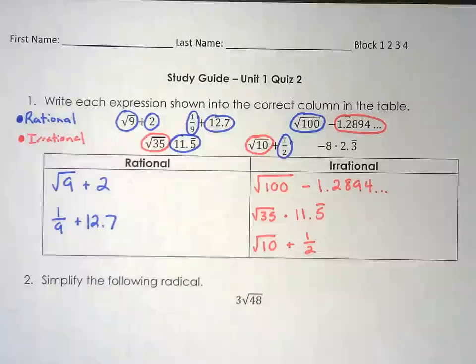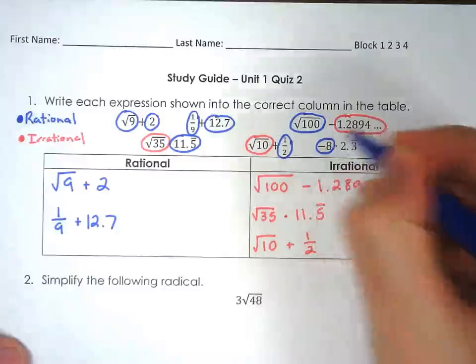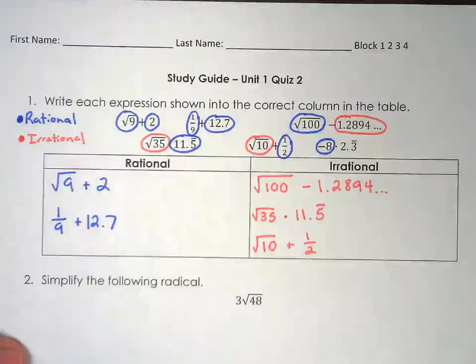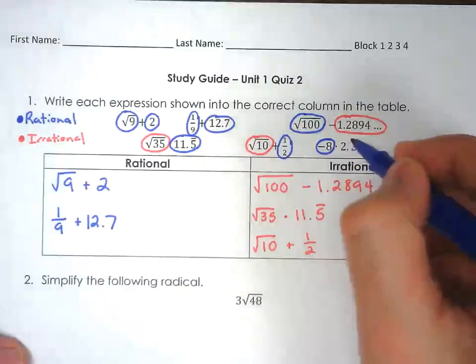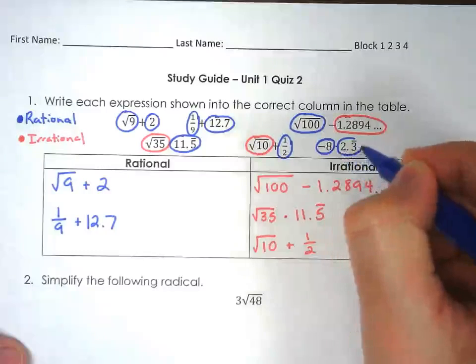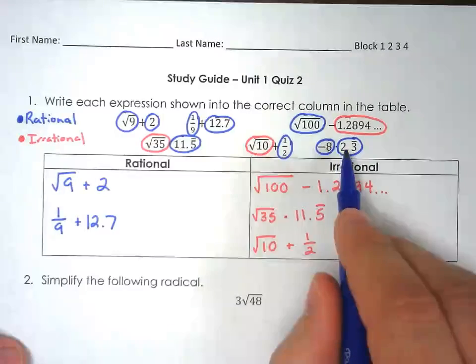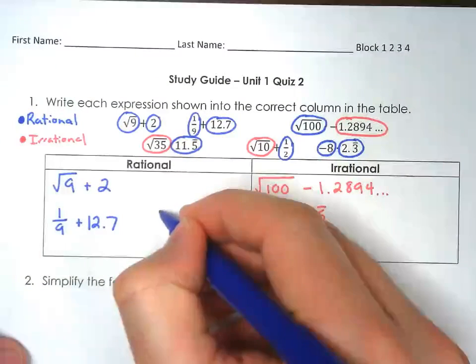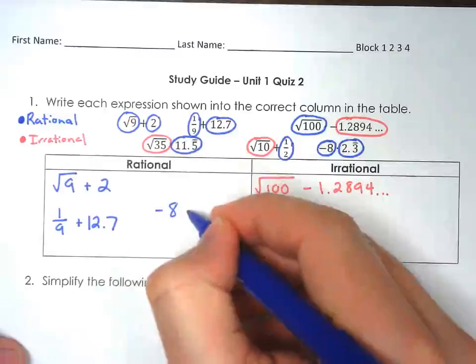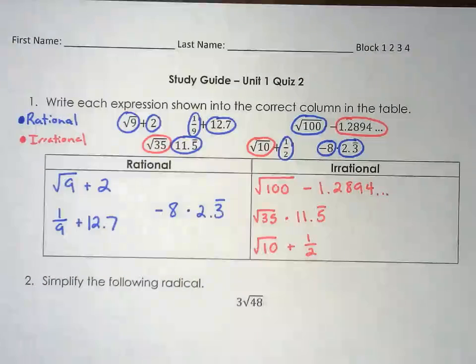Last but not least, we have negative 8. Negative 8 is considered to be a rational number. That is an integer. Remember all integers are rational. And it says times 2.3 repeating. Remember any repeating decimal is also going to be considered a rational number. So we have a rational and a rational. Well, two rationals always make a rational. So we're going to add negative 8 times 2.3 repeating to our list.